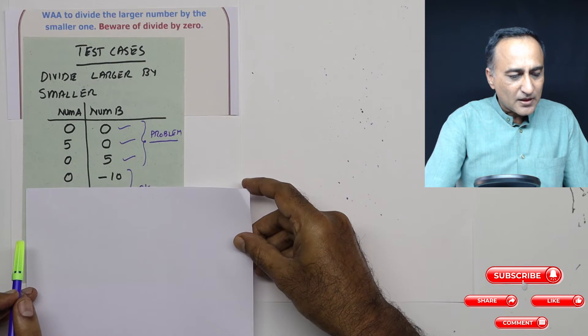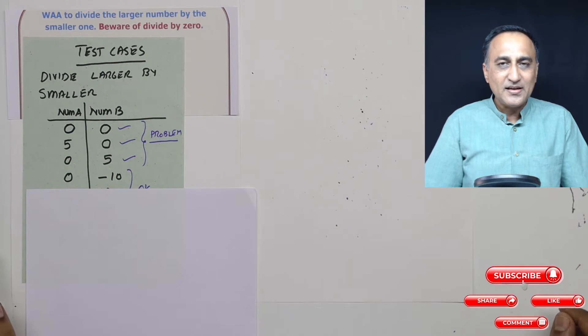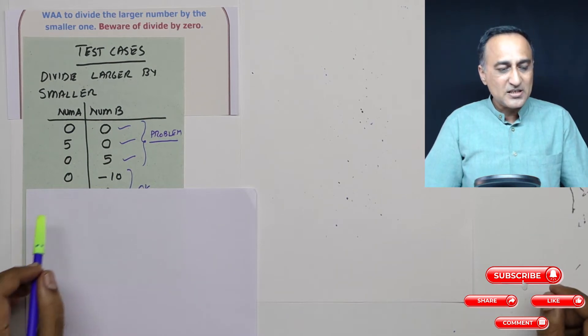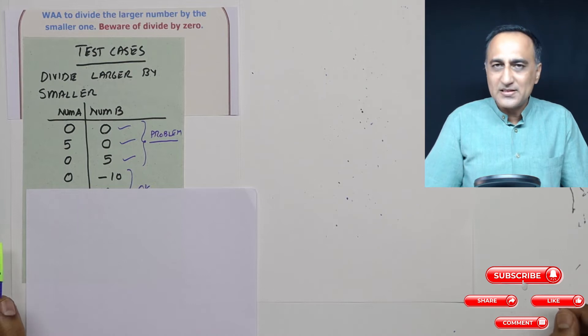Then if I go to the next data, one is 0 and one is minus 10. This is not a problem. The reason being 0 is bigger than minus 10. 0 upon minus 10. The answer is 0.